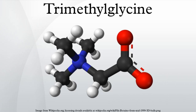Structure and reactions. Trimethylglycine is an N-trimethylated amino acid. This quaternary ammonium exists as the zwitterion at neutral pH. Strong acids such as hydrochloric acid convert TMG to various salts, with HCl yielding betaine hydrochloride.